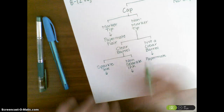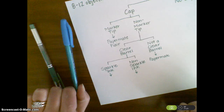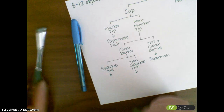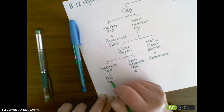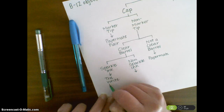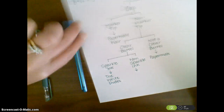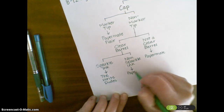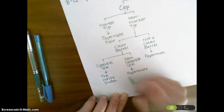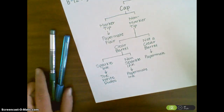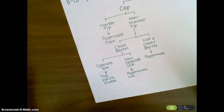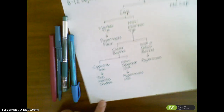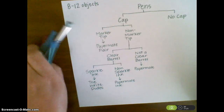My sparkle ink pen is called 'The Right Dudes' — that's the brand name. The non-sparkle ink pen is called 'Paper Mate Ink Joy.' Now that I've named these pens on my dichotomous key, I'm setting them aside. All of my capped pens are now finished and named on this side of my dichotomous key — this side is done.